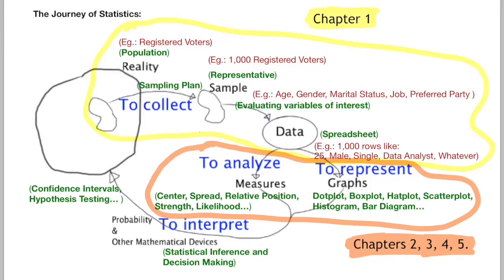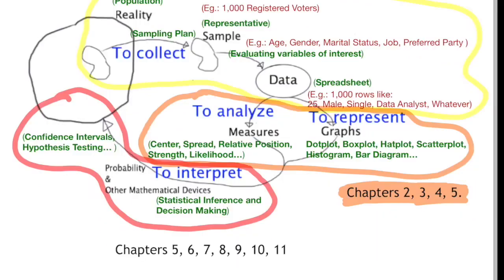The last part about statistical inference is covered in chapters 5, 6, 7, 8, 9, 10 and 11. I include chapter 5 here and here because it is the chapter that introduces probability. And probability is the main mathematical device that we use to infer about our population on the basis of our sample. Chapter 5 is about classical probability. Chapter 6 is about more theoretical probabilities. And chapters 7, 8, 9, 10 and 11 are about testing hypotheses and building confidence intervals for proportions and means involving one and more populations.